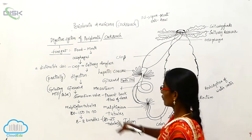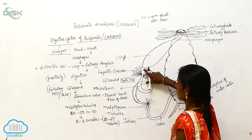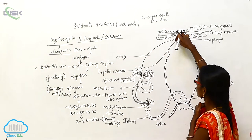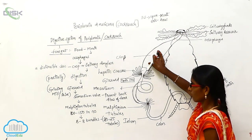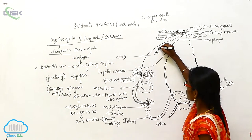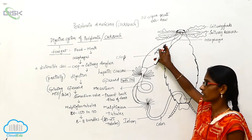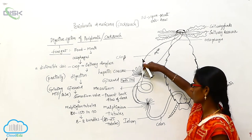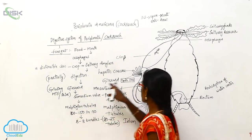The foregut extends from the mouth to the gizzard. The food material enters the mouth, goes to the esophagus, then to the crop. In the crop, amylase digests the food material partially — this is known as chyme. That food material then goes to the gizzard, which acts like a grinding mill as well as a sieve.